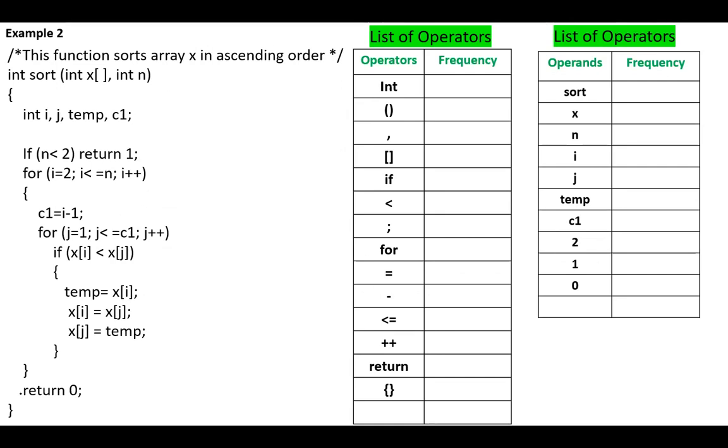First, we prepare the list of operators, int, parentheses, comma, etc. Their number, n1, equals to 14.